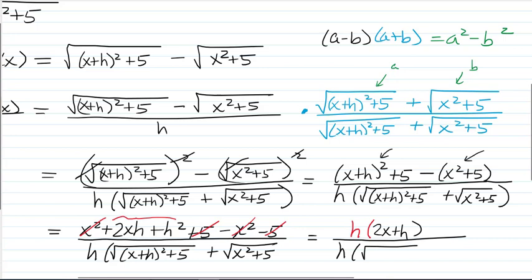So I'm actually going to factor that h out, leaving behind the 2x plus h. And so now we have a common factor in the numerator and the denominator. So dividing those, we get 1.